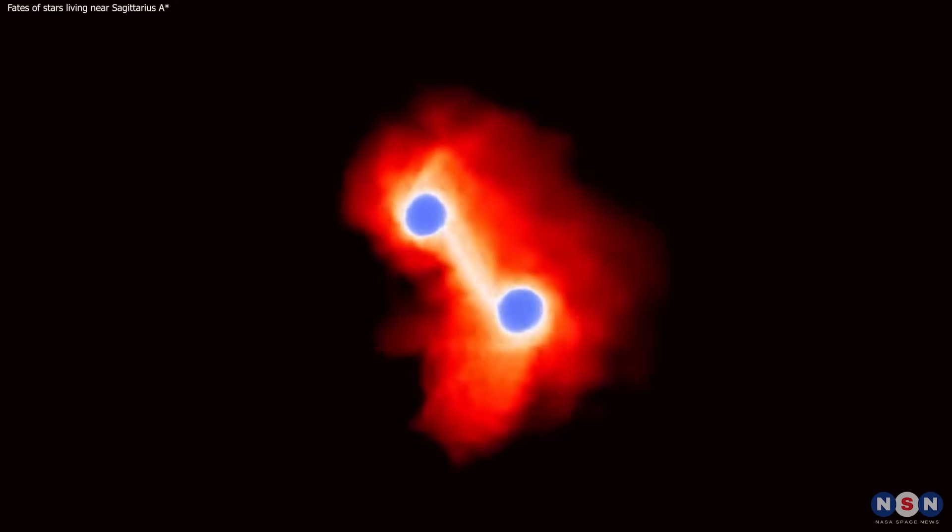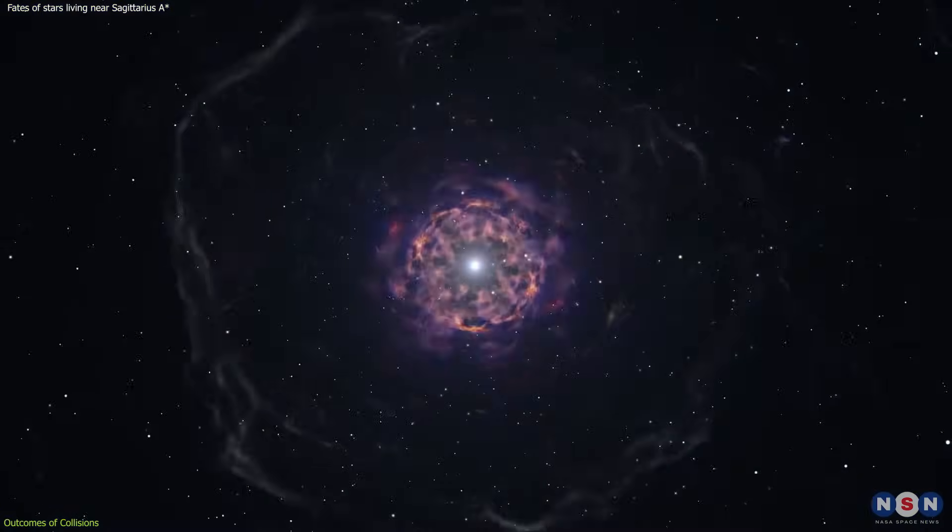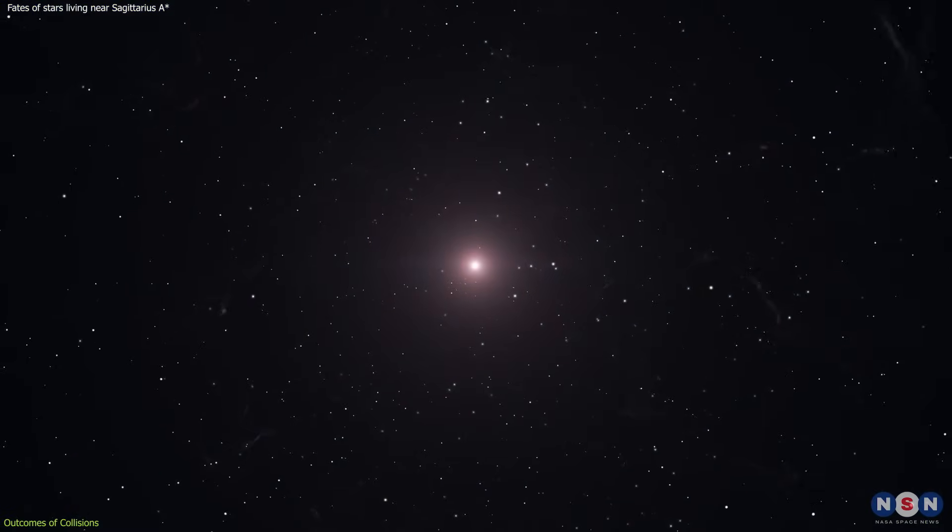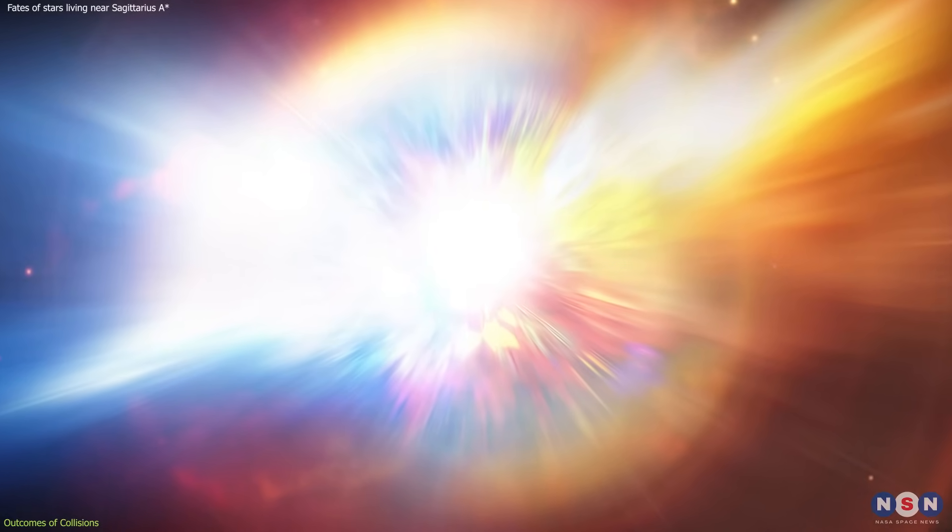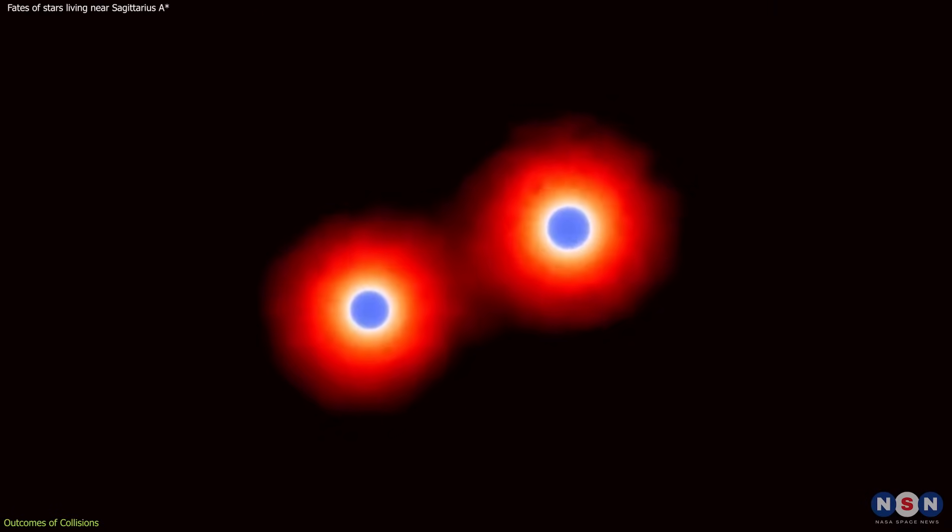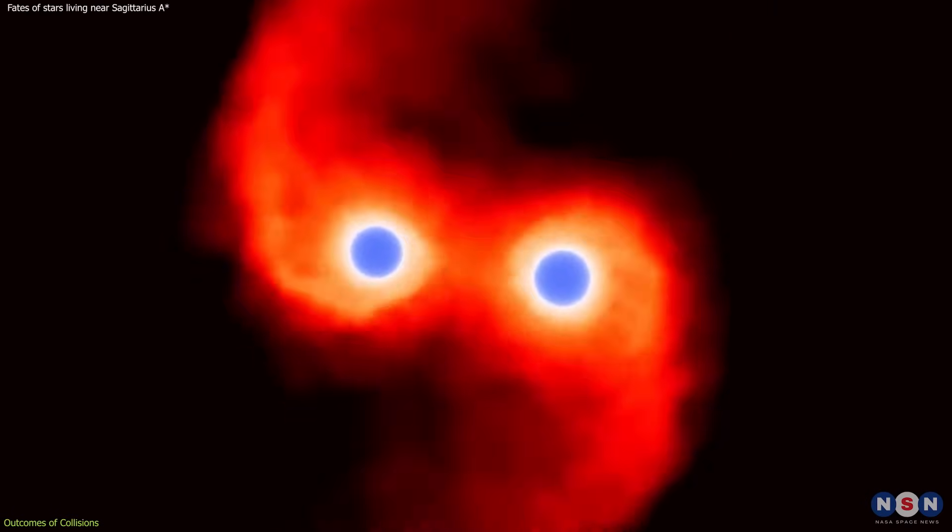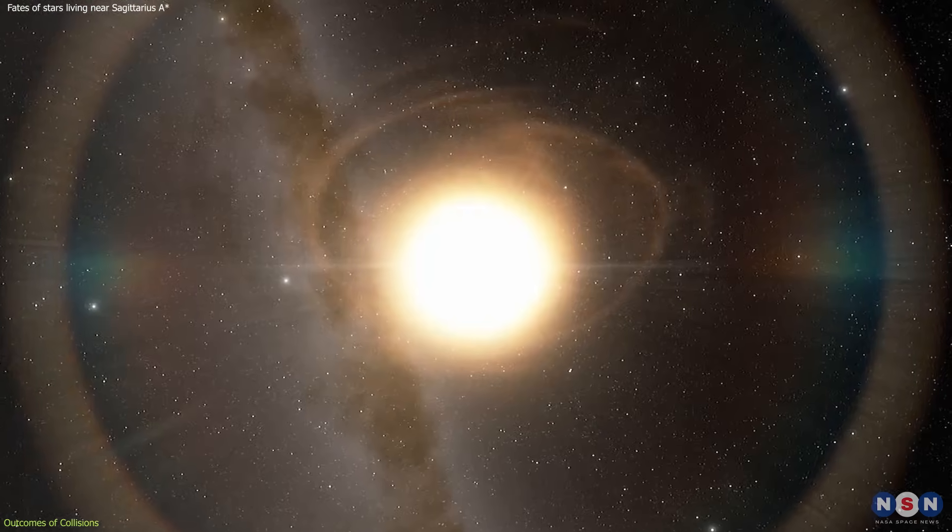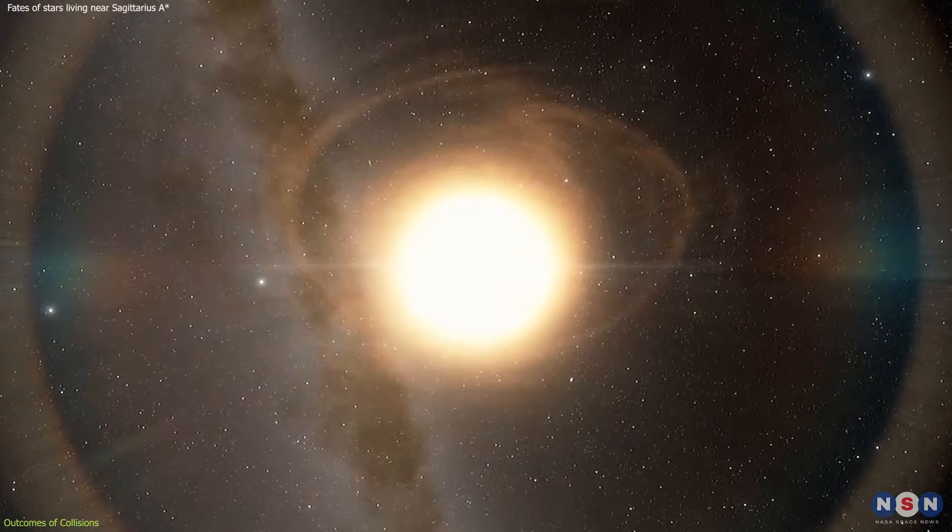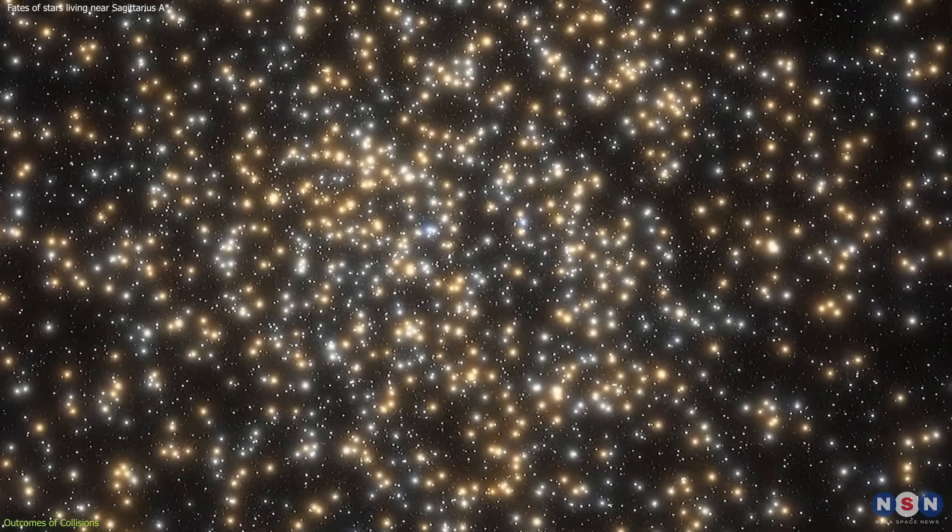These collisions have significant consequences for the stars involved. As stars collide and interact, they undergo dramatic transformations that alter their life paths. The most immediate outcome of these collisions is the creation of stripped-down, low-mass stars. These stars have lost a substantial portion of their outer layers due to the impact, exposing their denser cores. Despite their reduced mass, these stars can retain much of their brightness, leading to an unusual population of luminous, low-mass objects in the galactic center.